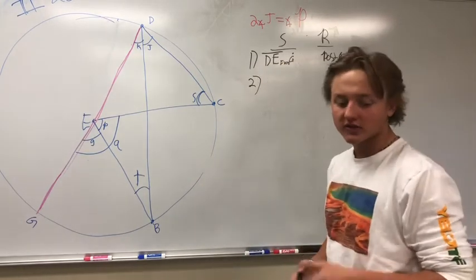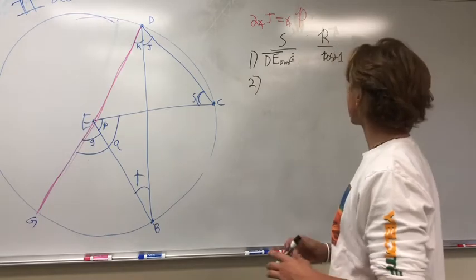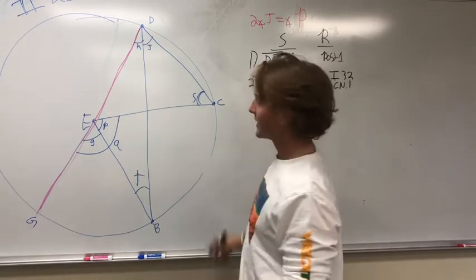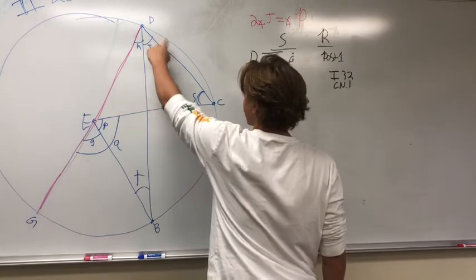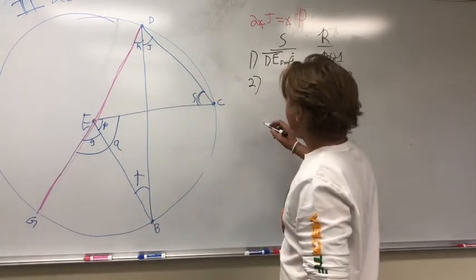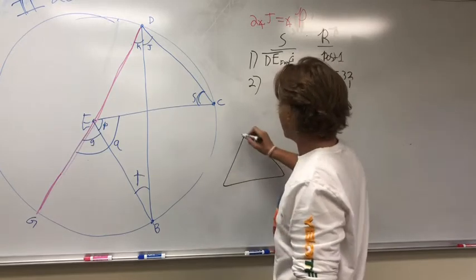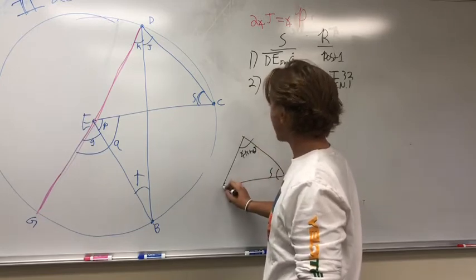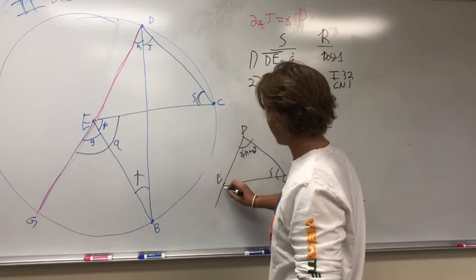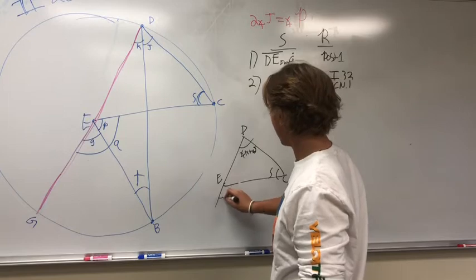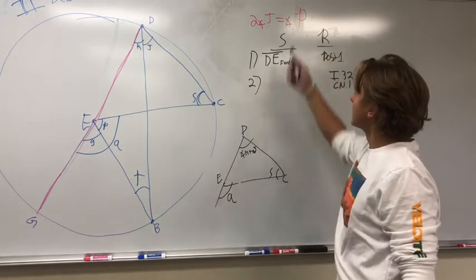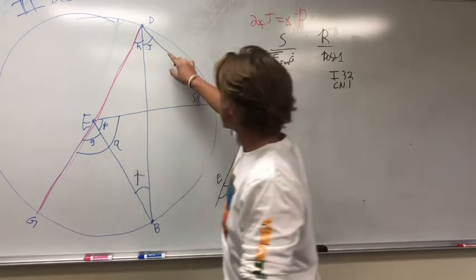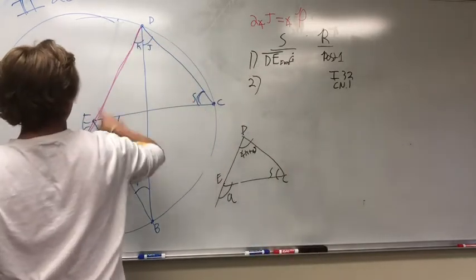Now we're going to work with triangles again — adding, subtracting, and finding different angles using Proposition 32 and Common Notion 1. The key thing to note is that angle KJ in this first triangle is just one combined angle. What we're trying to prove is that 2·angle J equals angle P, because angle P would be the exterior angle of this triangle.